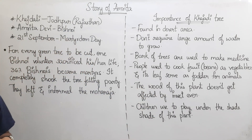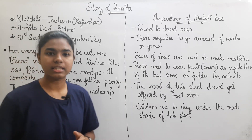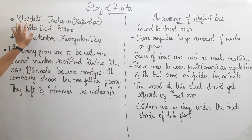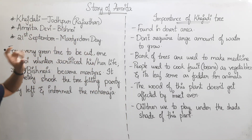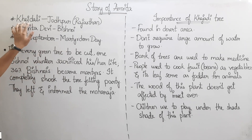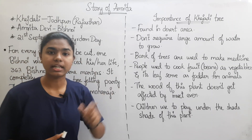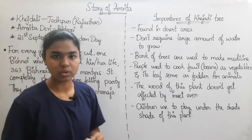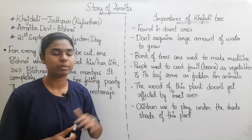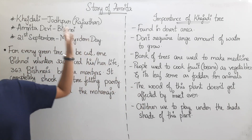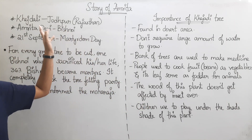Amrita Devi was a lady who lived in Rajasthan, in Jodhpur city. She came from the Khejri tree area. Why did people like the Khejri trees in that village? Because there were Khejri trees there. She followed and valued the Khejri trees.